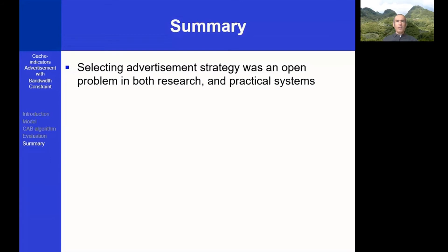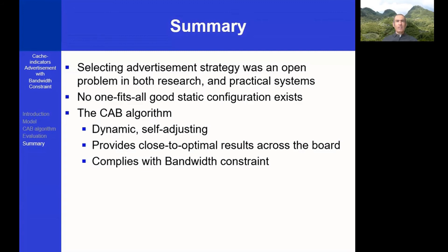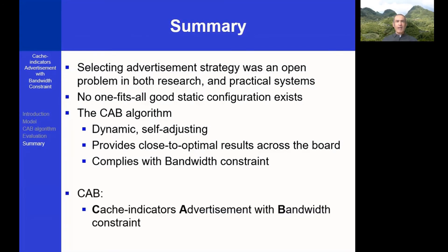To conclude, selecting an advertisement strategy was an open problem in both research and practical systems. Due to the dynamic characteristic of cache traces, there is no one-fits-all good static configuration. Hence, we designed the CAB algorithm, which is dynamic and self-adjusting. Our evaluation shows that CAB provides close to optimal results in various settings while complying with the bandwidth constraints. Recall that CAB stands for Cache Indicators Advertisement with Bandwidth Constraints.